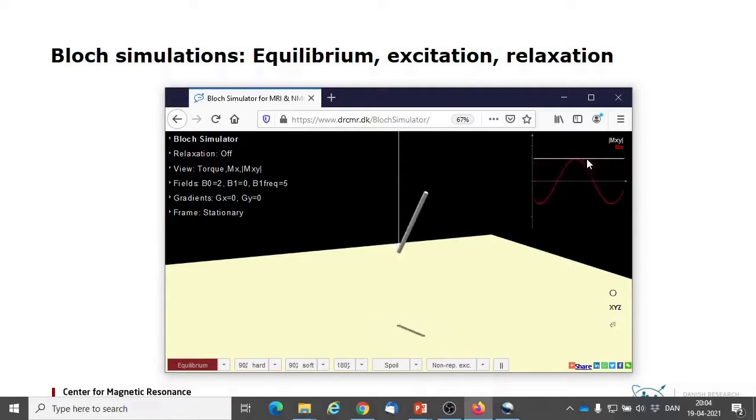Let's start in equilibrium, where the magnetization is longitudinal. With an RF pulse on resonance, the magnetization is rotated into the transversal plane.